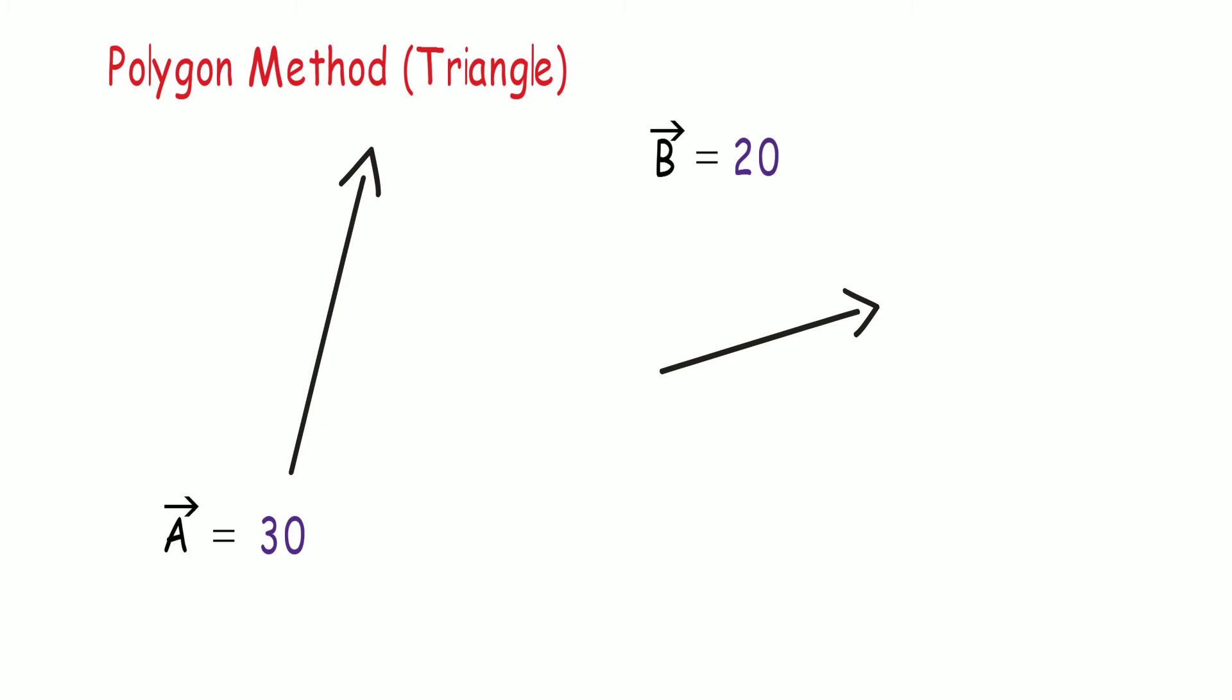Anyways, the units would not affect the calculations in any way. To understand the direction, let us say that the vectors make angles 75 degrees and 15 degrees both with the horizontal axis.